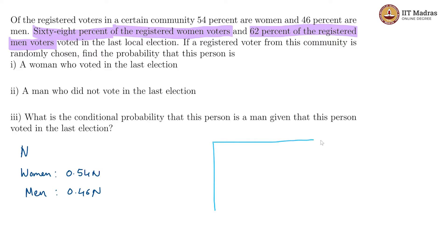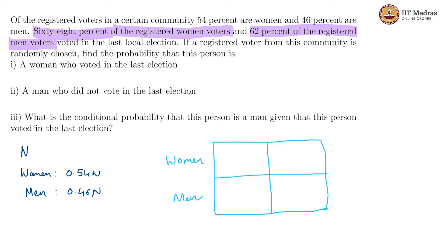Let us draw a box. So let this row be women and this row be men. The other criterion is whether they voted in the last election — so the 68 percent of women and 62 percent of men voted. This column is 'voted' and this column is 'not voted.' Now we try to fill these boxes. Of the 0.54n, 68 percent voted, which means this box would be 0.54n times 0.68, equal to 0.3672n. This is the number of women who voted.